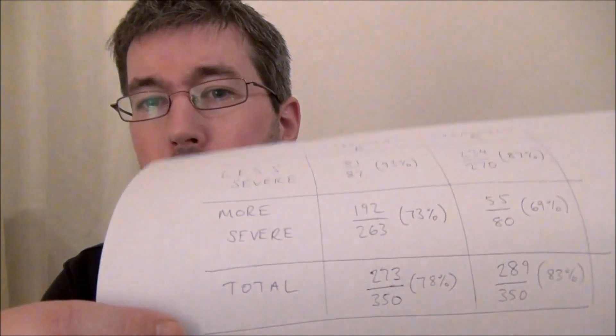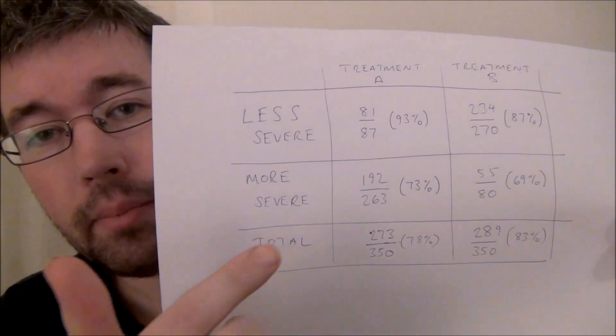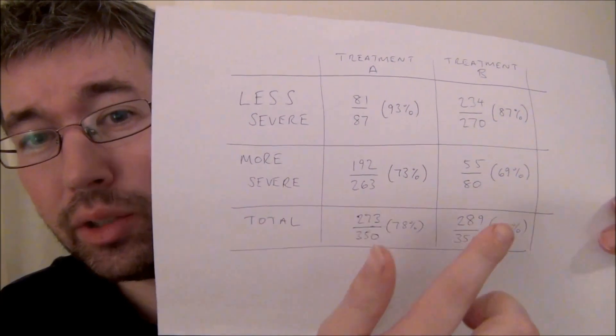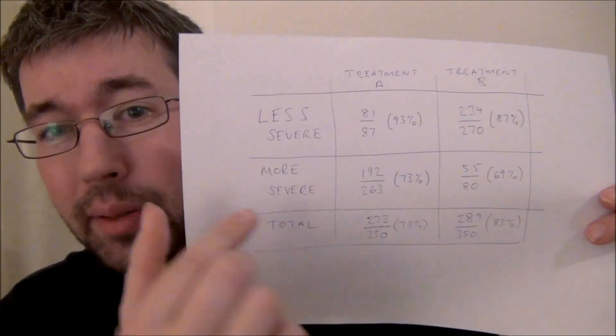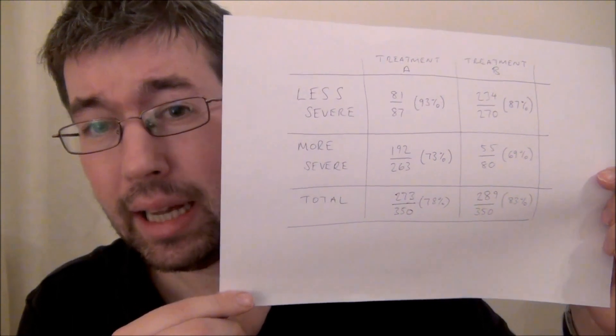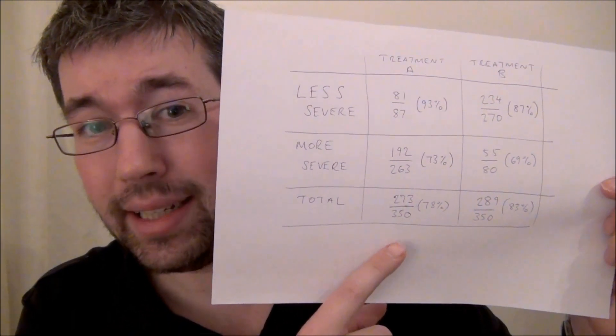This is Simpson's paradox. So what's actually going on? In this particular case, when you're doing a study like this, what you really want is to keep everything the same apart from changing the treatment, so that you're actually measuring the difference in the treatment. But that's not quite what's happened here. There's actually a hidden variable that we hadn't taken into account in the original study — the more severe cases are harder to treat for both treatments. If you look at the actual numbers, treatment A has been given much more of the more severe cases to treat than treatment B, and treatment B has been given much more of the easier-to-treat cases. So we're actually measuring the difference in the severity of the condition more than the difference in the treatment.